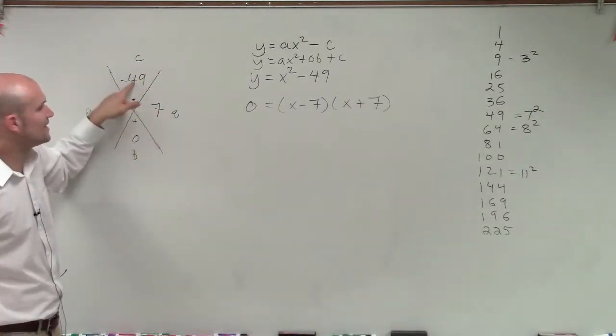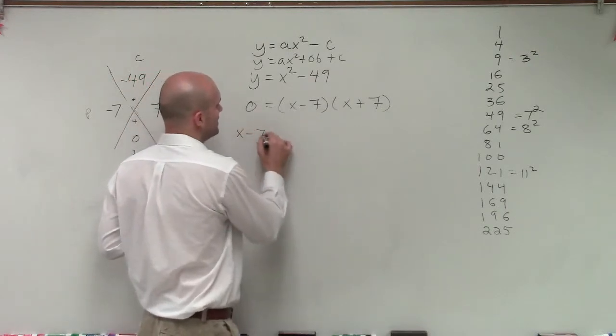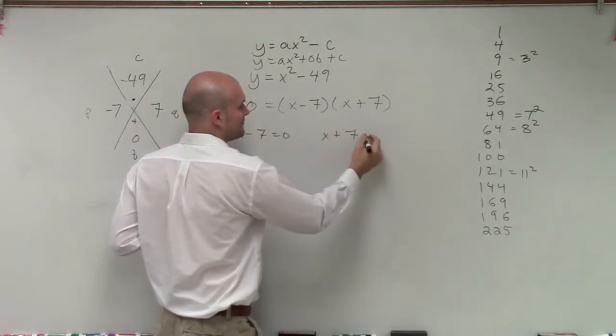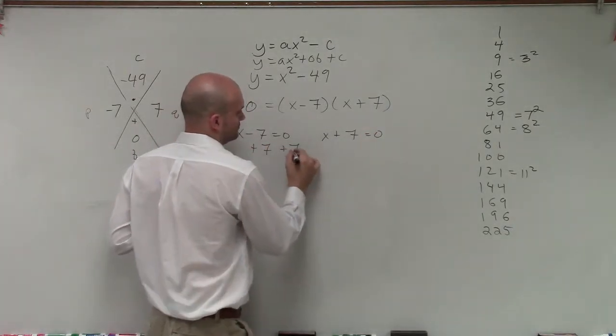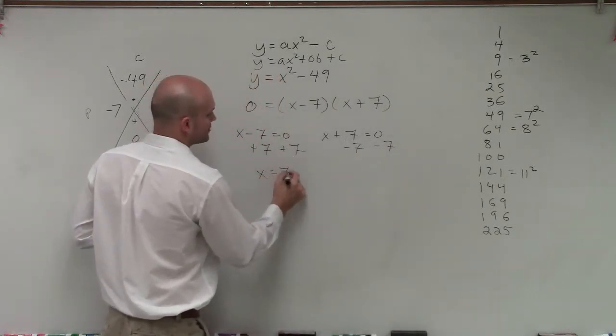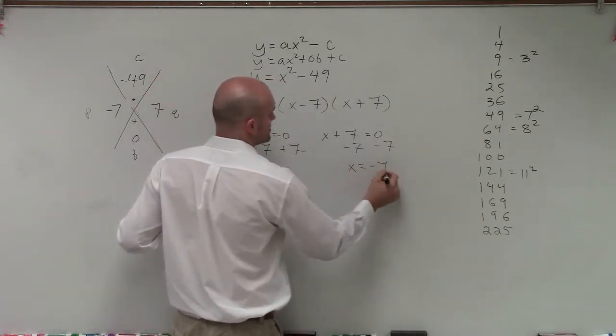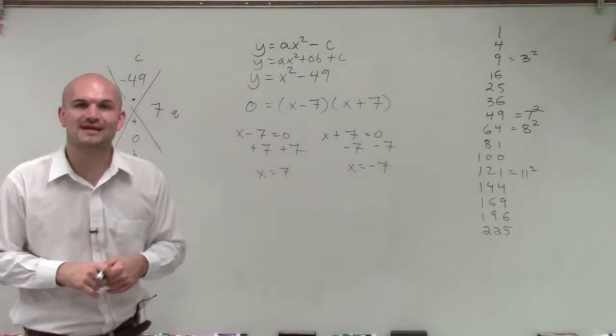Then I apply 0 product property to each factor, and then I solve for x by using my inverse operations. So x equals 7 and x equals negative 7. So there you go, ladies and gentlemen. That is how you solve by using the difference of two squares. Thanks.